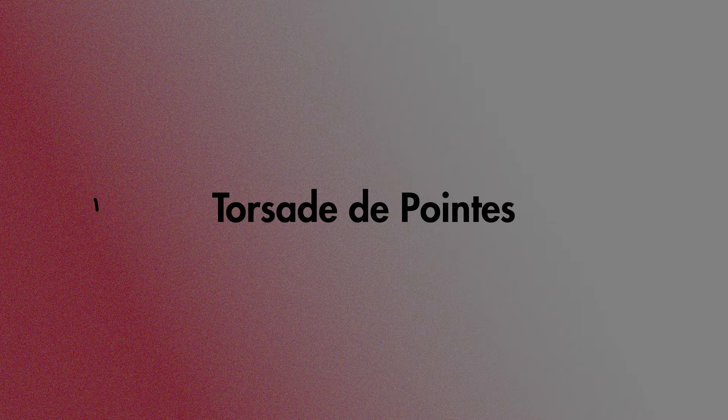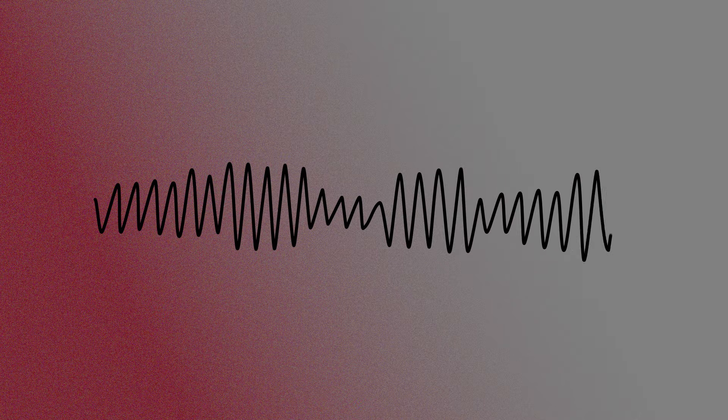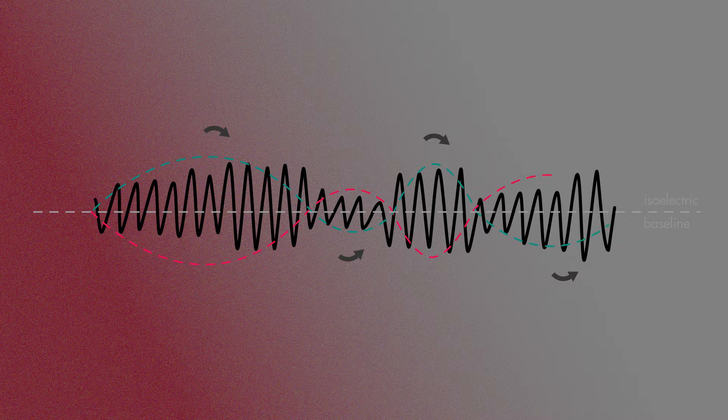Torsade de pointe is a dangerous type of cardiac dysrhythmia, which looks like this on a cardiac rhythm strip. It has this characteristic appearance of QRS complexes which seem to oscillate or twist around an isoelectric line, hence the name torsade de pointe, which loosely translates to 'twisting of points' in English.